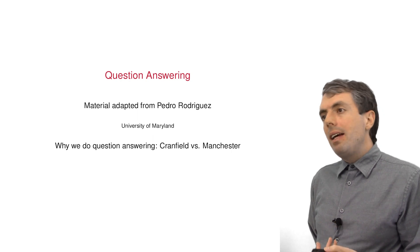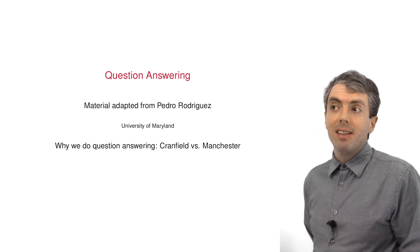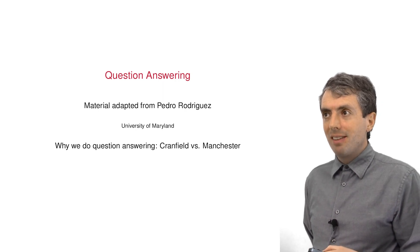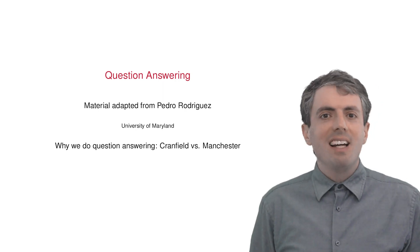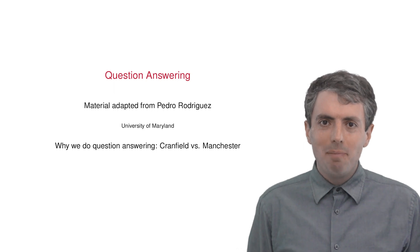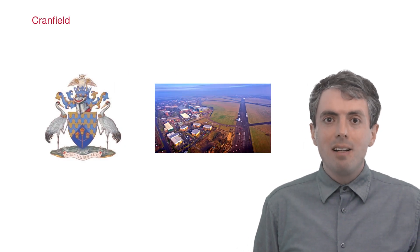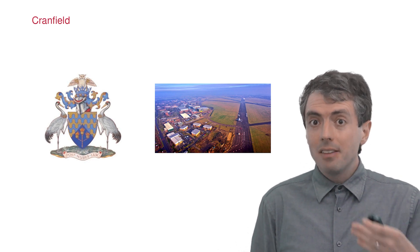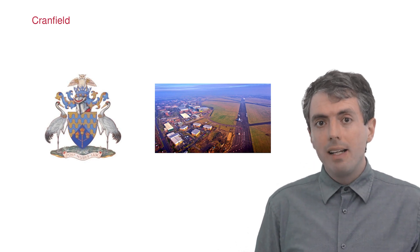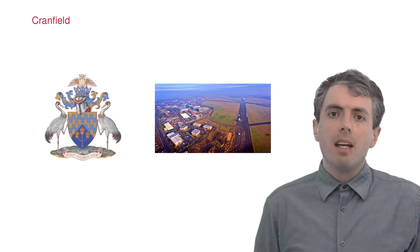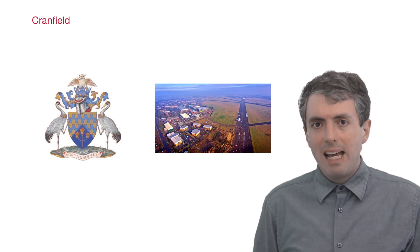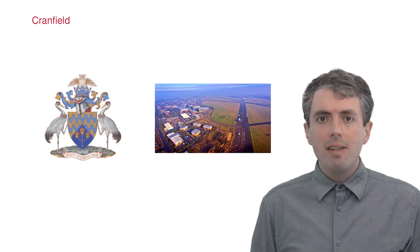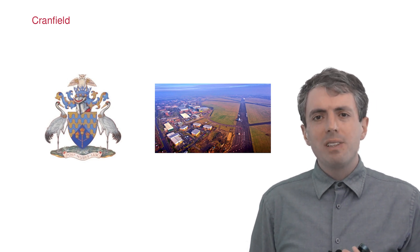The way I'd like to motivate this discussion is contrasting Cranfield and Manchester. That may sound like a National League football matchup, but it's a distinction that helps us understand why people and computers try to answer questions. Even though many people do question-answering research trying to get machines to answer questions, they often do so for different reasons.